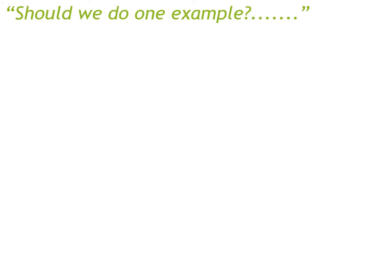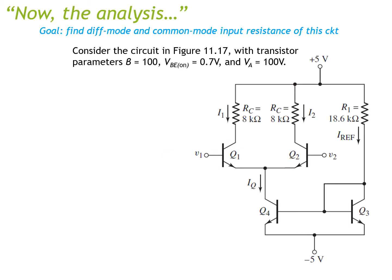Let's do one quick example. The goal is to find the differential mode and common mode input resistance for the circuit in figure 11.17 in the textbook. Given transistor parameters: β equals 100, VBE equals 0.7 V, a finite Early voltage leading to a transistor output resistance, and IRF equals 0.5 mA.